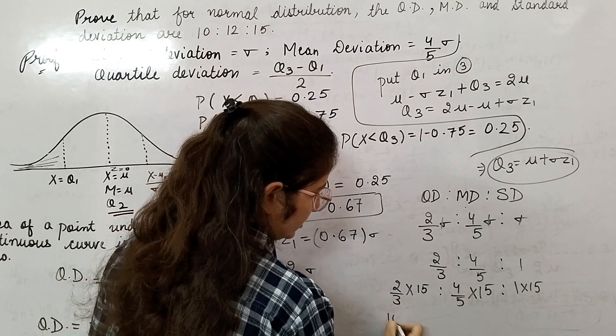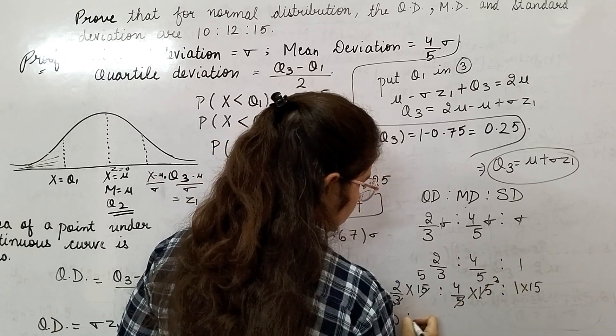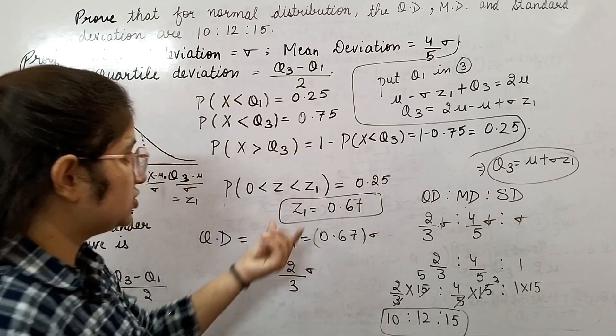Now take the LCM, which is 15. Multiply all these terms by 15: 2 by 3 into 15, 4 by 5 into 15, 1 into 15. You will get 10 into 12 into 15. This is your required ratio.